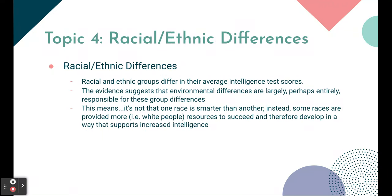Topic four: racial and ethnic differences. Racial and ethnic groups differ in their average intelligence test scores, but evidence suggests environmental differences are largely — perhaps entirely — responsible for these differences. One race is not smarter than another. The reason differences exist is because of the environments humans have created that have made it easier for one race to succeed. Some races have been provided more resources and therefore develop in a way that supports increased intelligence test performance.